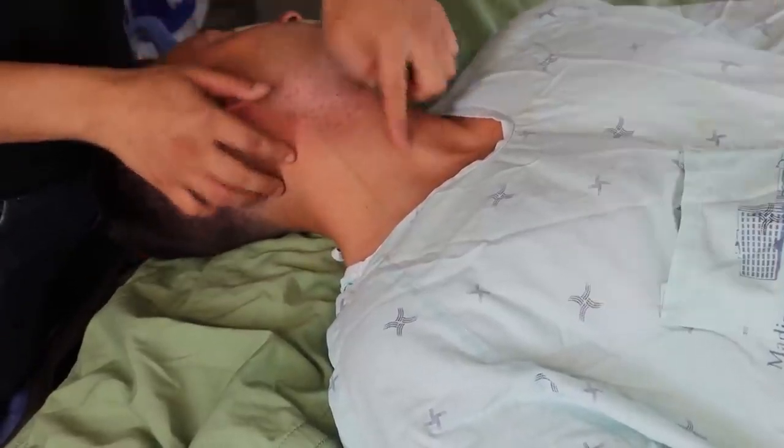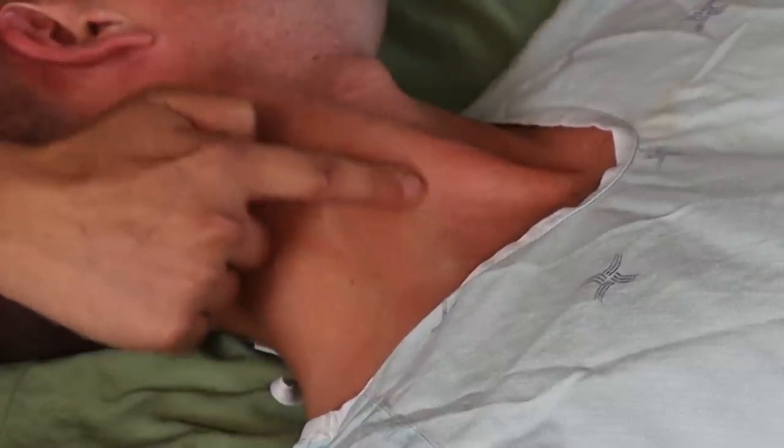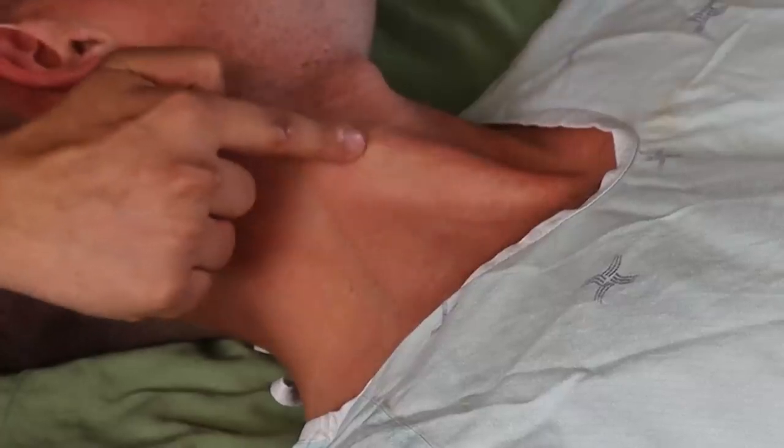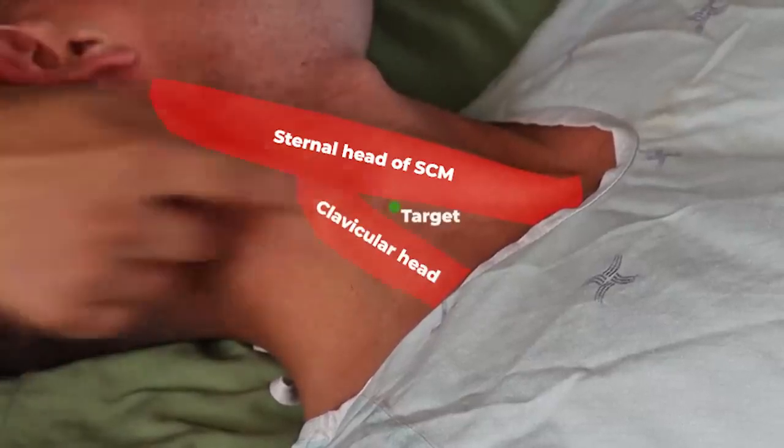Let's have a look at some landmarks. We'll do the line with ultrasound that is absolutely the standard of care and what you should be doing. But in the old days, people used the two heads of the sternocleidomastoid, the sternal head and the clavicular head, which form a triangle whose apex marks the vein.